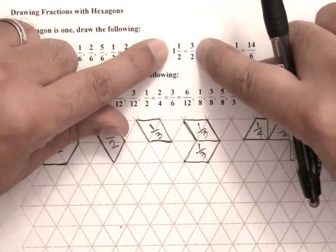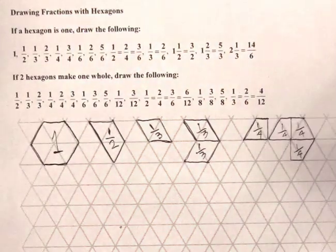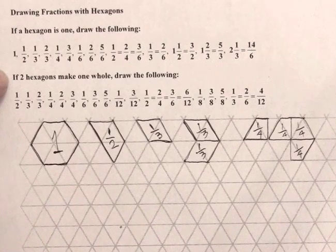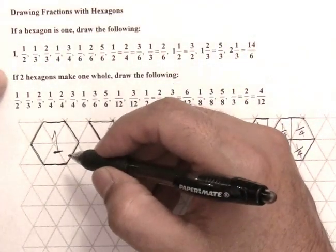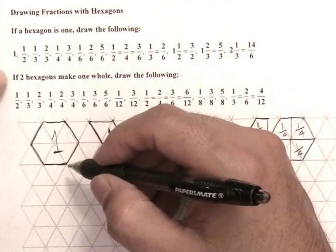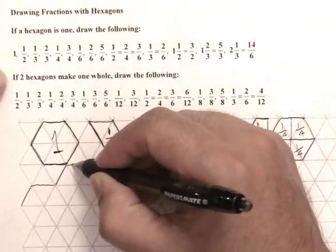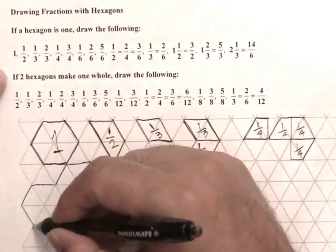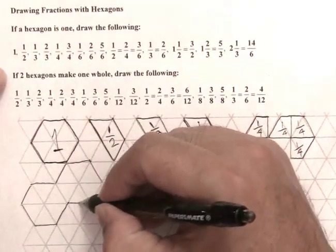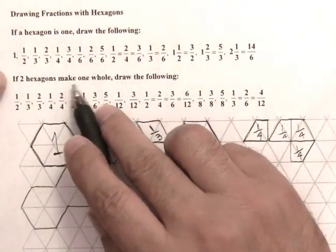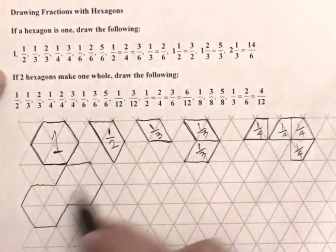One third is the same as two sixths. One and a half is the same as three halves, and so on. In the second part they tell us that two hexagons make one. So now we're talking about a different setup where two hexagons make one. If we put two hexagons together like this, two hexagons make one whole — so this is one right here.